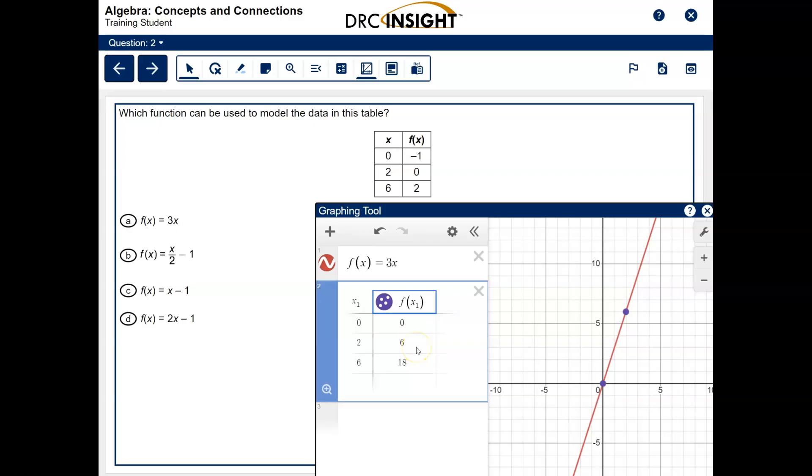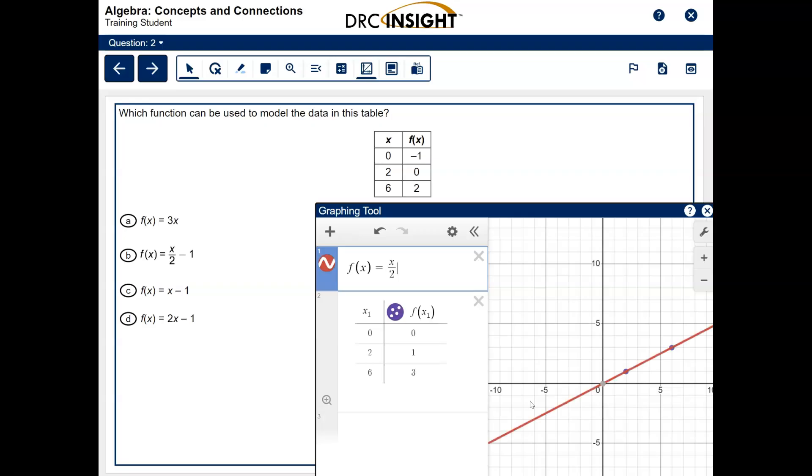Fortunately, we don't have to do any more work with that table. All we're going to do is change the function to match answer choice B. So I'm going to delete 3x, type x divided by. The divide is actually on the same button the question mark is on your keyboard. So just press that button that has the question mark, but don't press shift. That will give you the divide. And then put your 2, and then out to the side, we're going to put minus 1. And now you'll notice that the y coordinates that are under f of x1 are negative 1, 0, and 2. And those do match the ones that are in the test. So the correct answer in this problem is answer B.